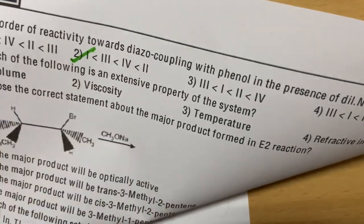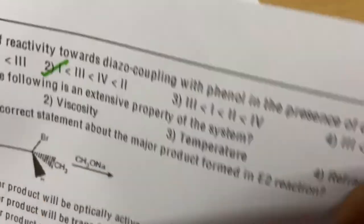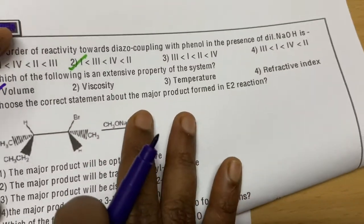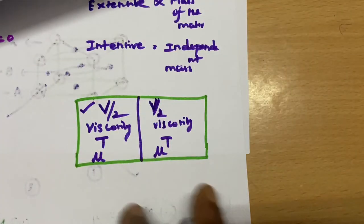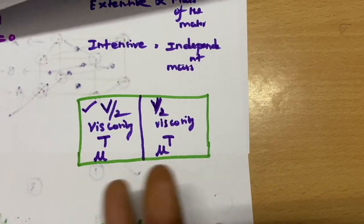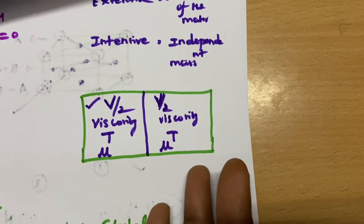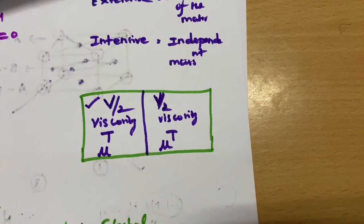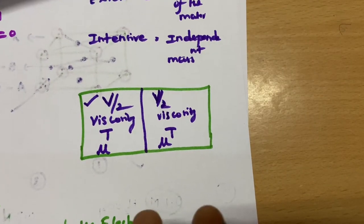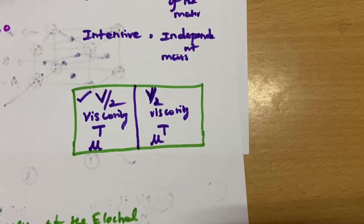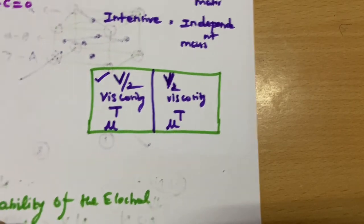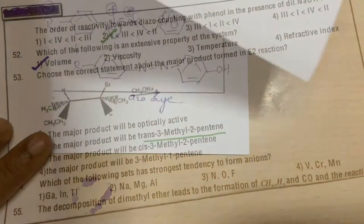So volume is the extensive property — that is the answer. For any extensive or intensive property question, you can use this trick: whichever property changes when you divide the system is extensive; whichever remains unaffected is intensive.